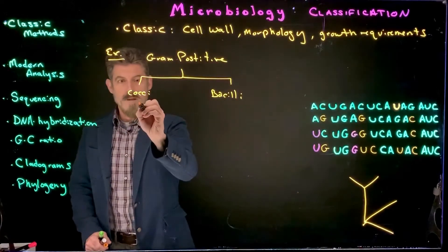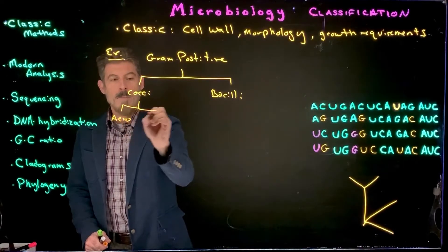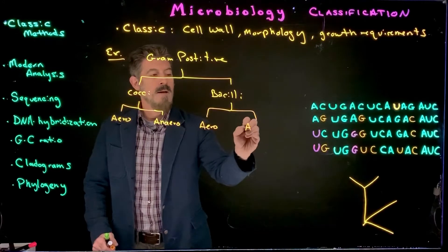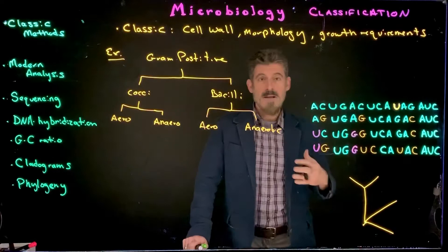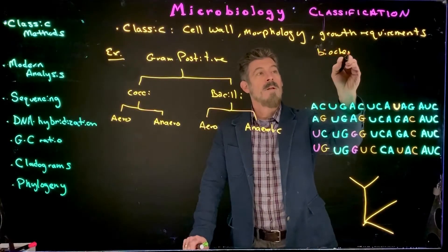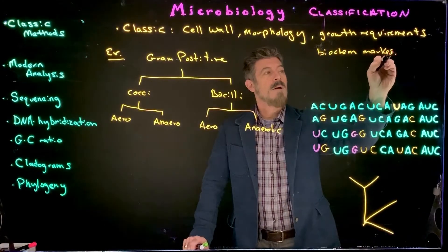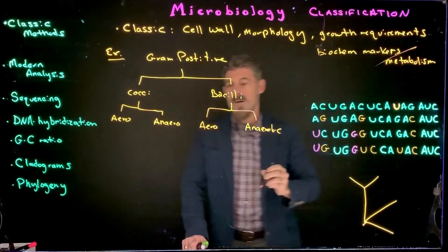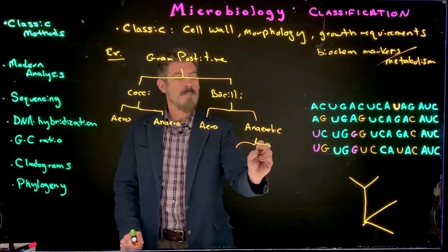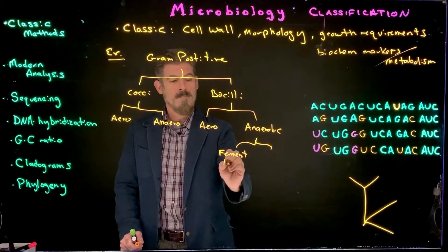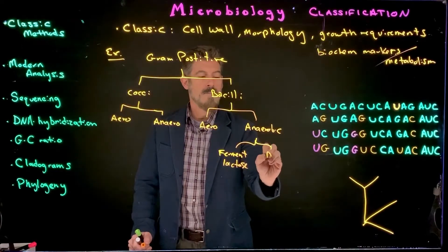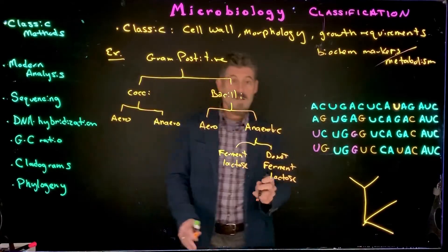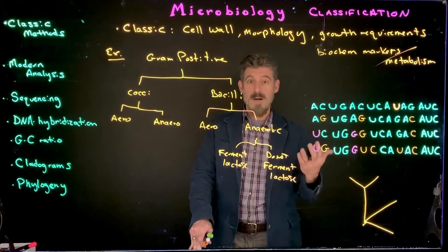Then we might look at growth requirements. For the cocci, we'd have aerobic and anaerobic, and the same thing for bacilli — aerobic and anaerobic. We'd also look at biochemical markers and metabolism, so we might say, for example, ferment lactose or do not ferment lactose. Looking at the variety of different biochemical tests is something we do in the lab.